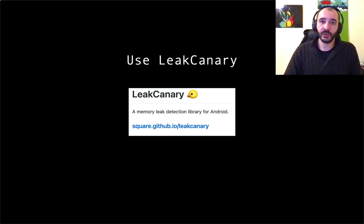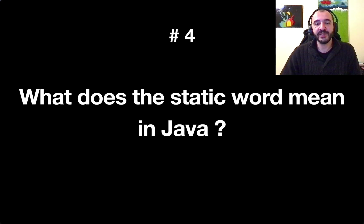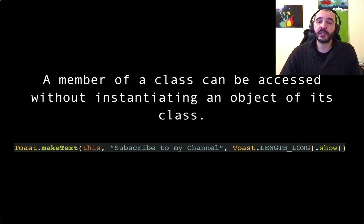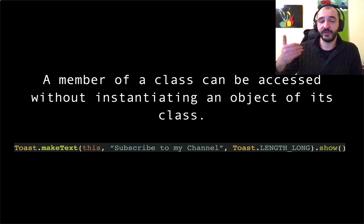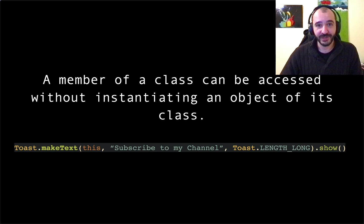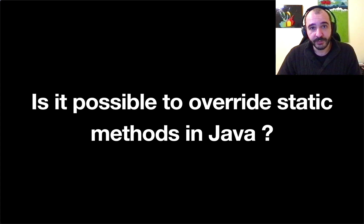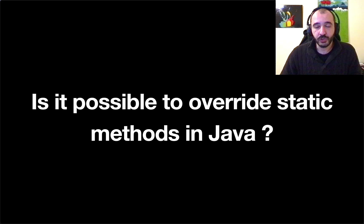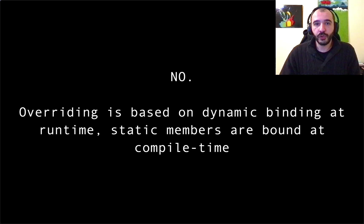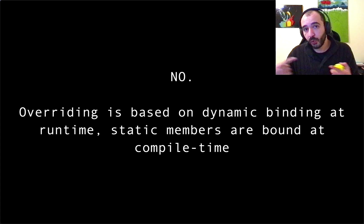Number four: what does the word static mean in Java? A static member of a class can be accessed without having to create an object of that class. For example, the makeText method from Toast is a static method — you just call ClassName.method(). A follow-up question: is it possible to override static methods in Java? Note that they're asking about Java, not Kotlin — I interviewed recently and many questions were about Java. The answer is no. The concept of overriding is based on dynamic binding at runtime, while static members are bound at compile time, so it cannot be done.